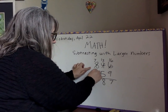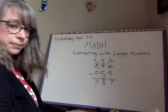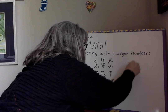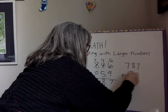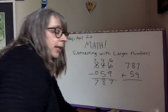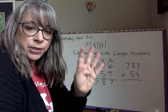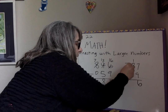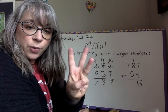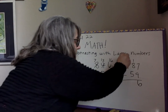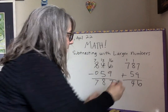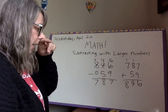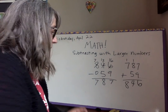Thirteen minus five is eight. And seven minus zero is seven. So our answer is seven hundred and eighty-seven. Let's check by adding: seven hundred and eighty-seven plus fifty-nine. Nine plus nine is eighteen, carry one. Eight plus five plus one is fourteen, carry one. Seven plus one is eight — eight hundred and forty-six. Eight hundred and forty-six. Correct!